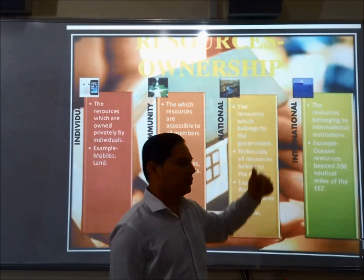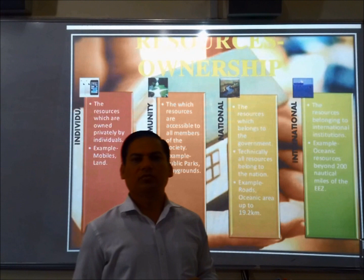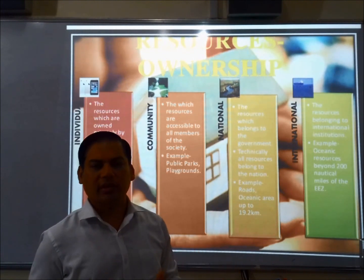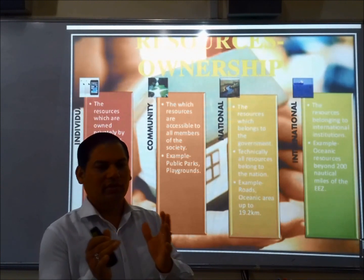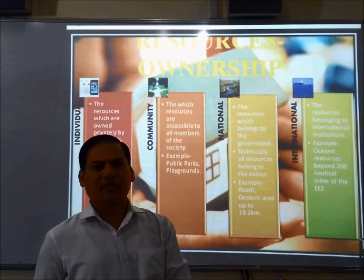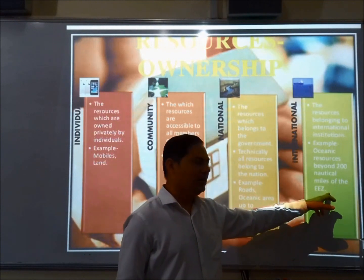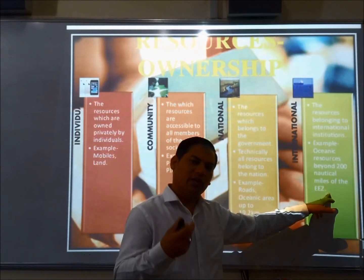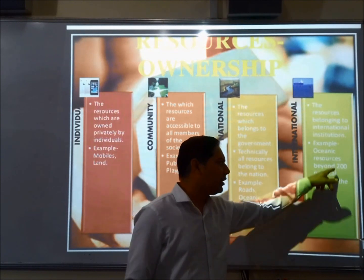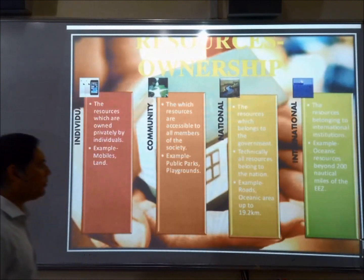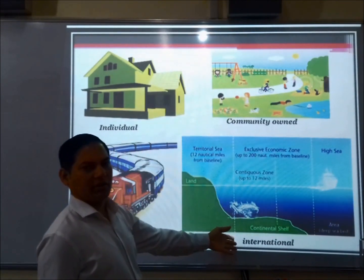International resources are regulated by certain institutions such as the UNO, which determines which resources beyond the country's boundary fall in this category. Beyond 200 nautical miles from your coast — in the sea and ocean — whatever is available is an international resource. So we have individual, national, community-owned, and international resources.